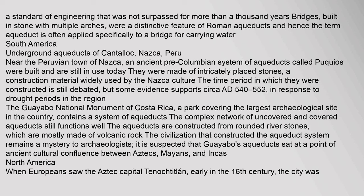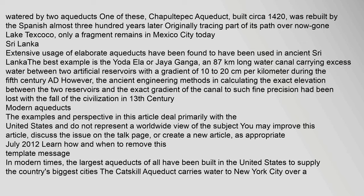When Europeans saw the Aztec capital Tenochtitlan early in the 16th century, the city was watered by two aqueducts. One of these, the Chapultepec Aqueduct, built circa 1420, was rebuilt by the Spanish almost 300 years later, originally tracing part of its path over the now-gone Lake Texcoco. Only a fragment remains in Mexico City today.